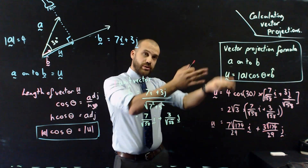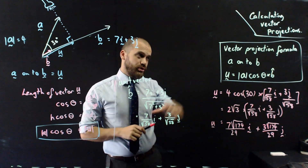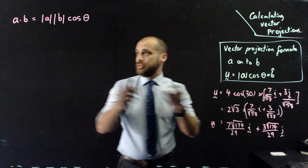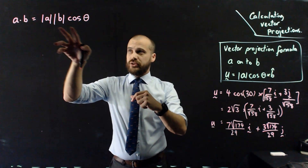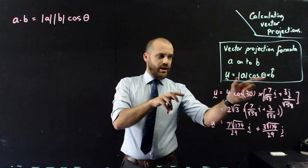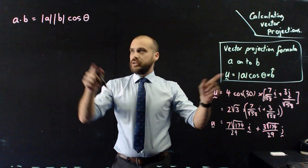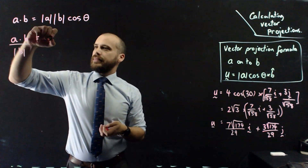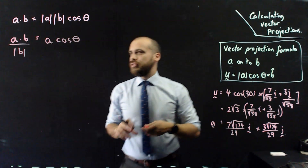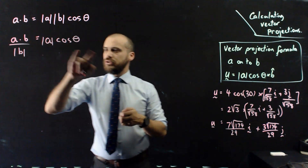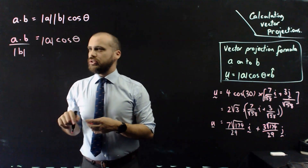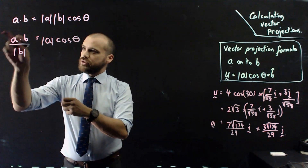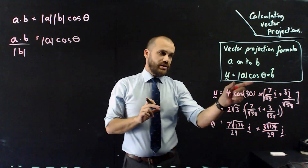There is another neat formula we can derive from this. You might have noticed that |A| cos θ is part of the dot product formula: A·B = |A||B| cos θ. If I divide both sides by |B|, I get A·B / |B| = |A| cos θ. So I can substitute that into our vector projection formula, giving a new formula that doesn't require an angle.